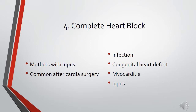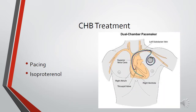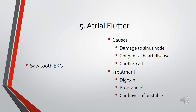Complete heart block is common in infants born to mothers with lupus, can occur after cardiac surgery, and may be caused by infection, congenital heart defects, or myocarditis. If you see a question about a mother with lupus and a baby with arrhythmias, think complete heart block. Treatment involves pacing, either an external pacer with pacing wires or isoproterenol. Atrial flutter is characterized by a sawtooth appearance on EKG, caused by sinus node damage, congenital heart disease, or cardiac catheterization. Treatment includes digoxin or propranolol, with cardioversion if the patient is unstable.